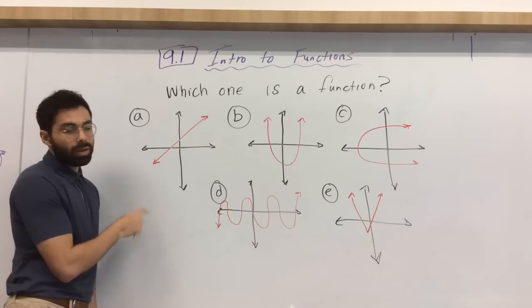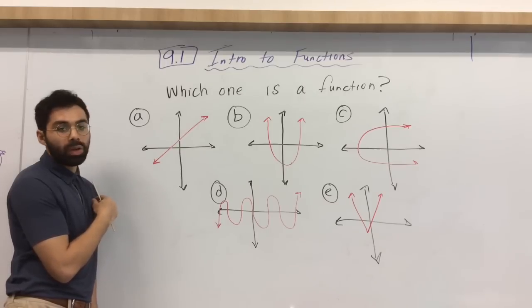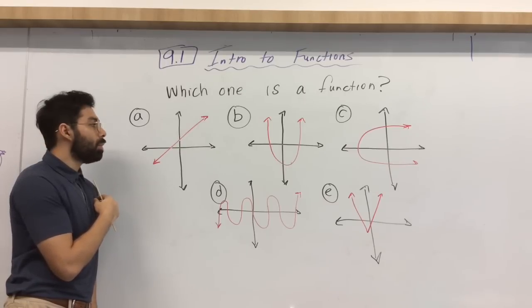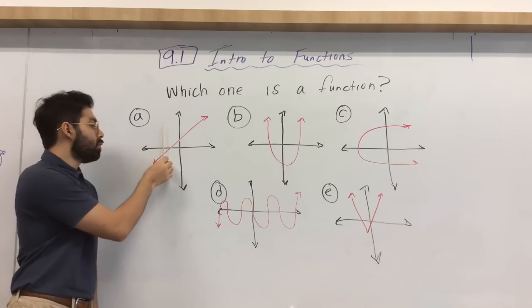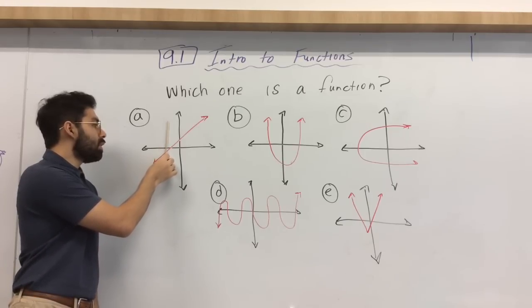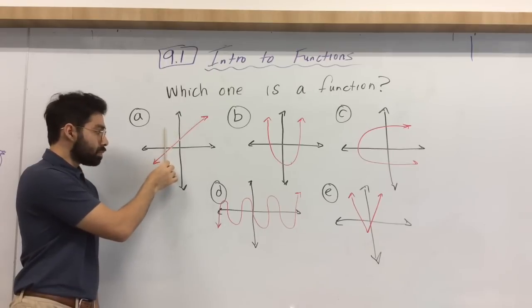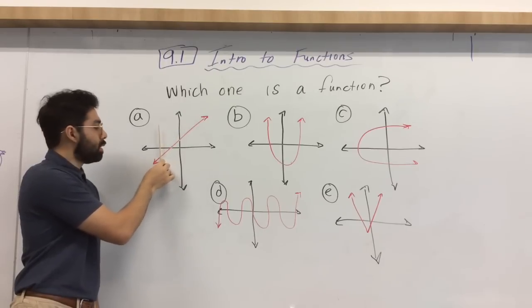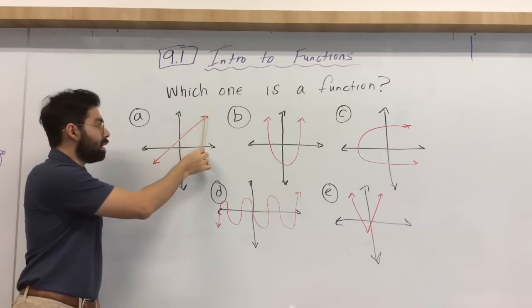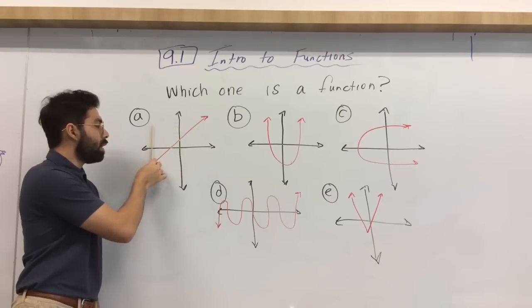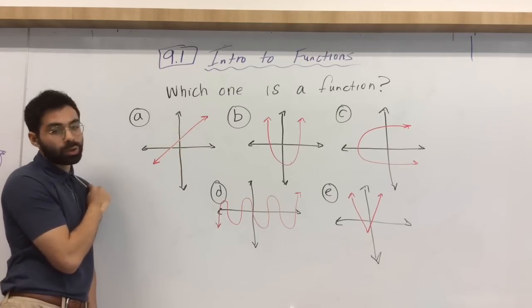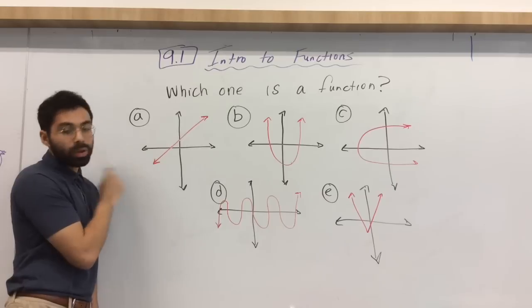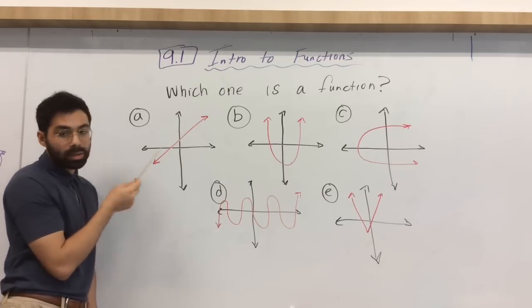So remember, function, you have one x for one unique y. And what happens here, if I can show you for a, is if we put a vertical line, will that vertical line touch that graph, this red line, anywhere more than once? So if you go along from left to right, it does not touch anywhere on that red line more than once. So again, go back to what a function actually means. One x for one unique y. Okay, so x's cannot repeat.